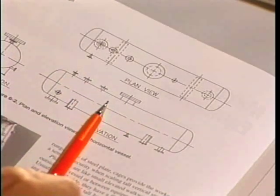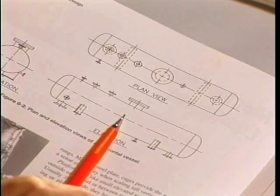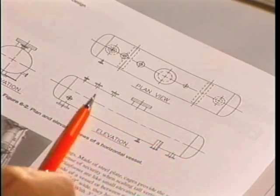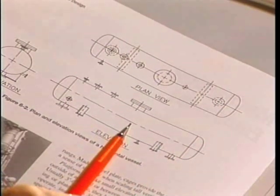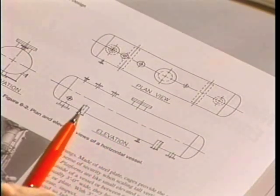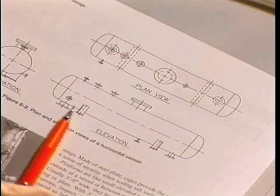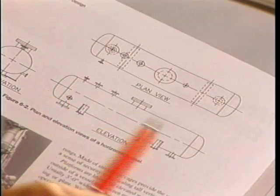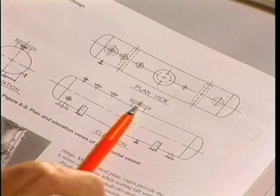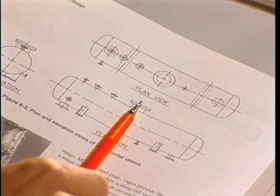The side view, or elevational view, is used when representing the horizontal vessel on an elevation drawing to show the height of the vessel. Again, we can see the saddles or cradles on the ends, the two heads, other nozzles, and the manhole opening, which we will discuss later.